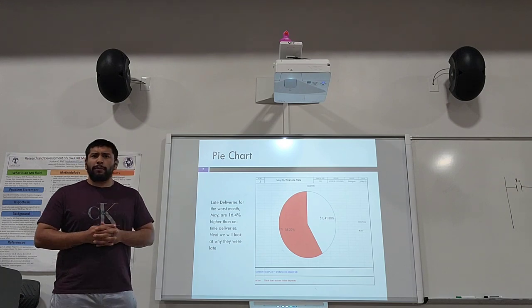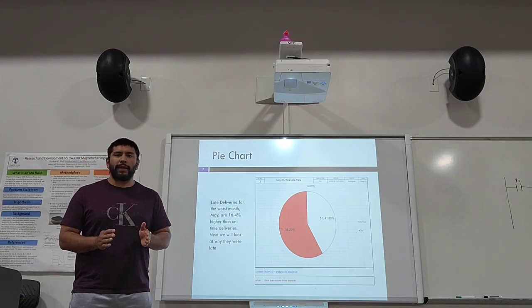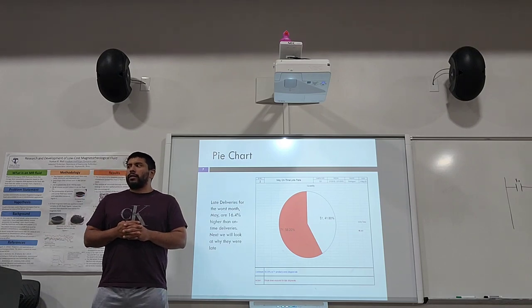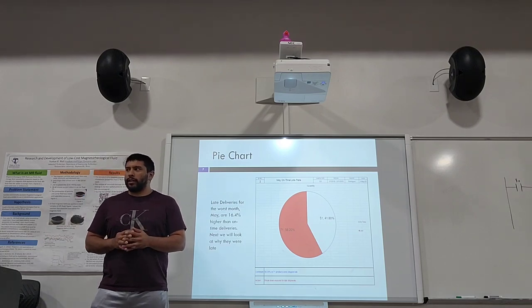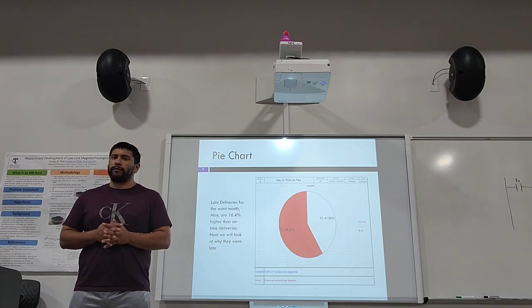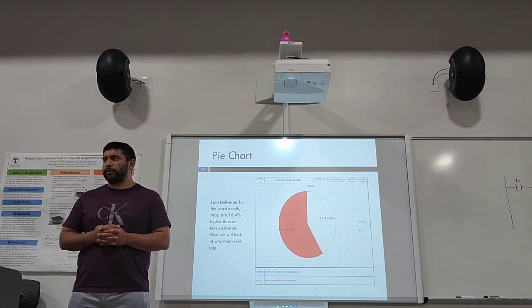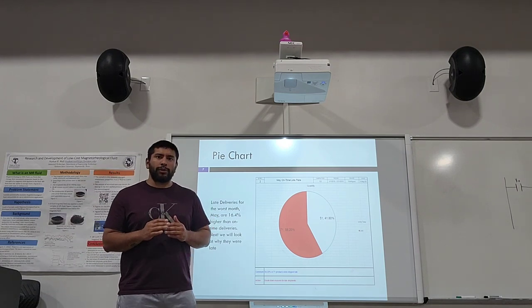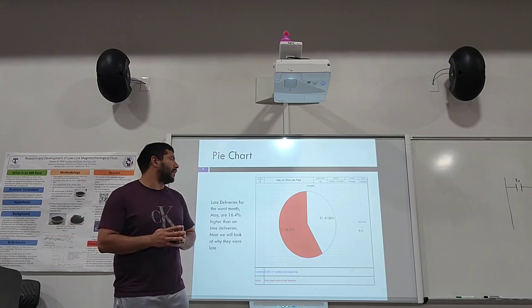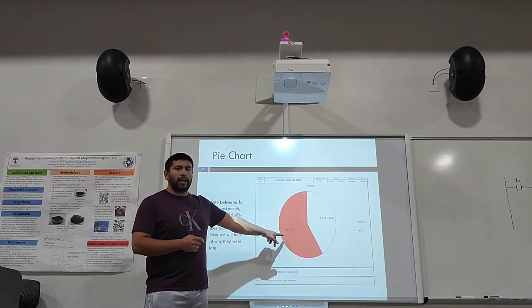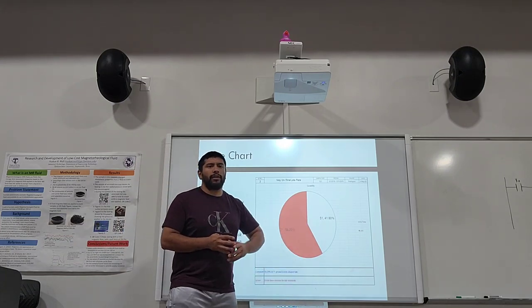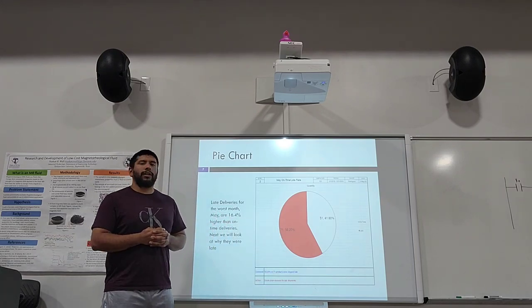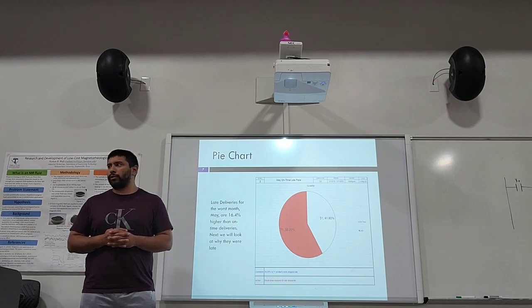Here we're breaking down the specific month of May, looking at the late deliveries for the worst month. They are at 16.4 percent higher than on-time deliveries. We're looking at a sample size of 122 total deliveries made in the month of May. 71 are late, 51 are on time. As you can see on the pie chart, the late ones are a lot more at 58.2 percent.